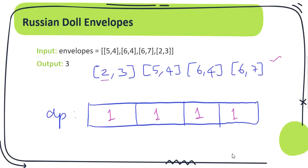We are going to have a dynamic array DP where we keep track of the solution for each sub-problem and then arrive at our bigger solution. After sorting, the array is ordered based on the first value — the height. We fill our DP array and arrive at the bigger solution. This DP array represents how many envelopes we can put into each other at each particular point. We will fill it with all ones at first, because each envelope individually counts as one Russian doll.